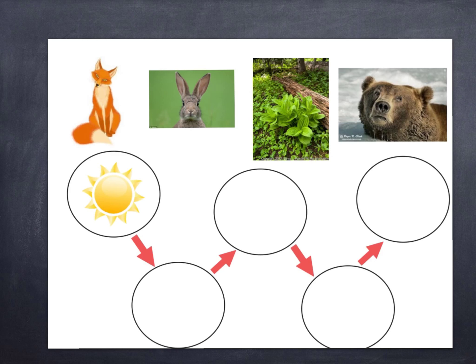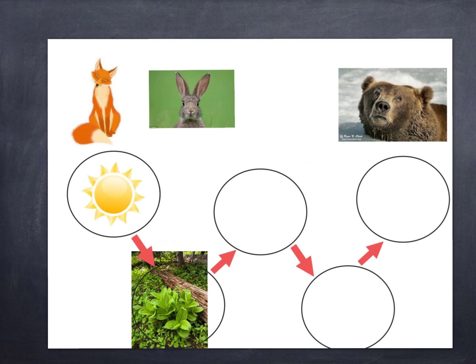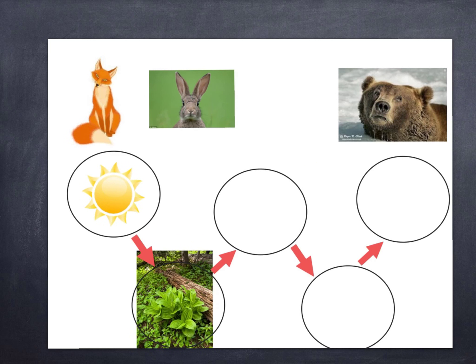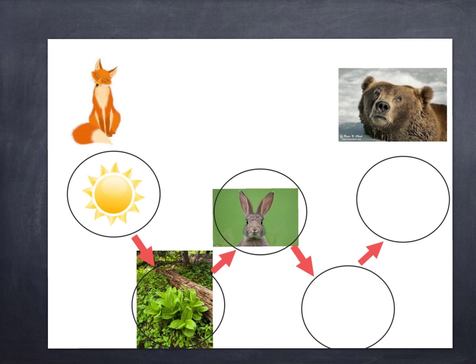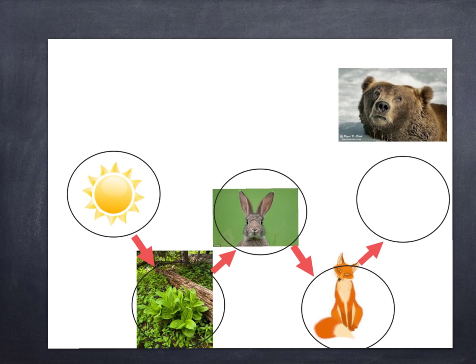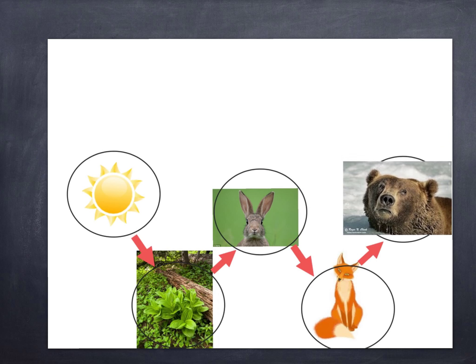I know that the sun provides nutrients so the plants can grow, so I'm just going to grab the plant and move it into that part of the food web. The rabbits are herbivores, so the rabbit will be eating the plant. And then the fox will eat the rabbit, and then the bear will eat the fox.